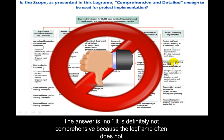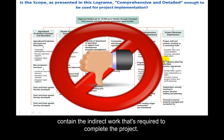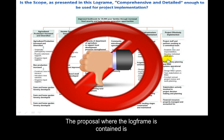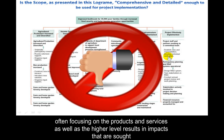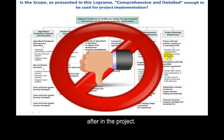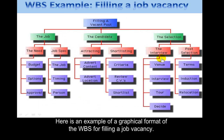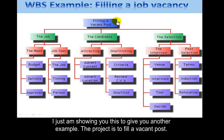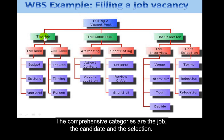It's definitely not comprehensive because the log frame often does not contain the indirect work required to complete the project. The proposal where the log frame is contained is often focusing on the products and services as well as the higher-level results and impacts sought after in the project. Here is an example of a graphical format of a WBS for filling a job vacancy. The project is to fill a vacant post, and the comprehensive categories are the job, the candidate, and the selection.